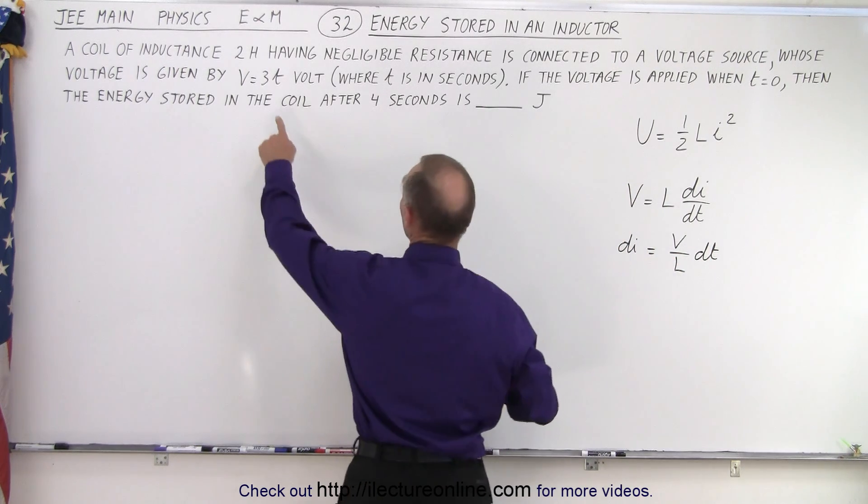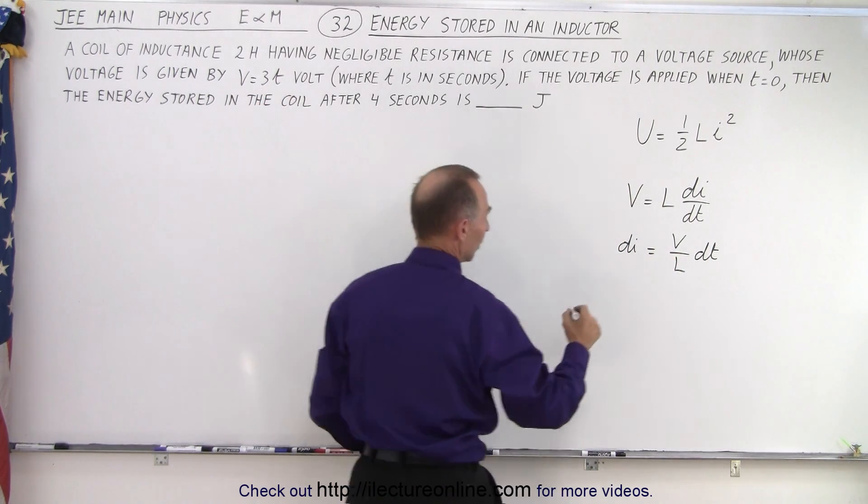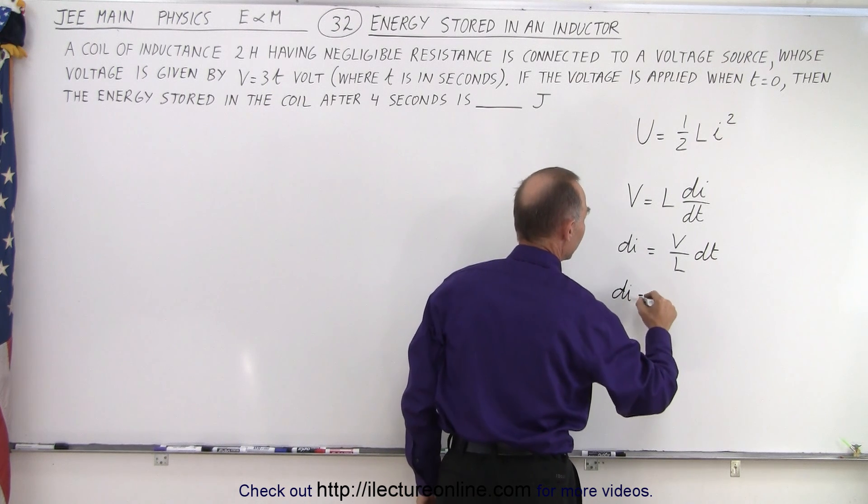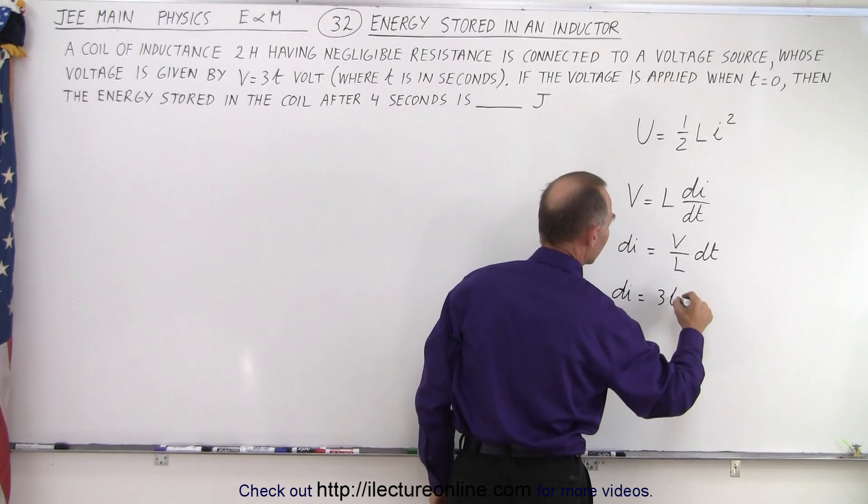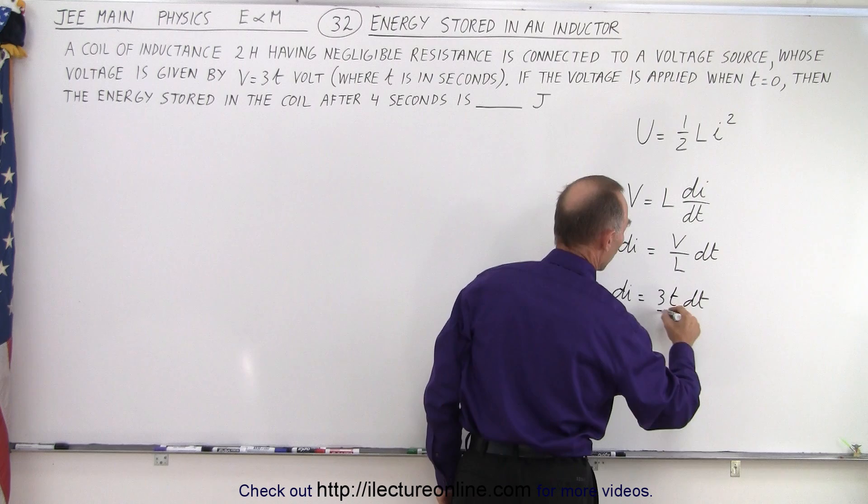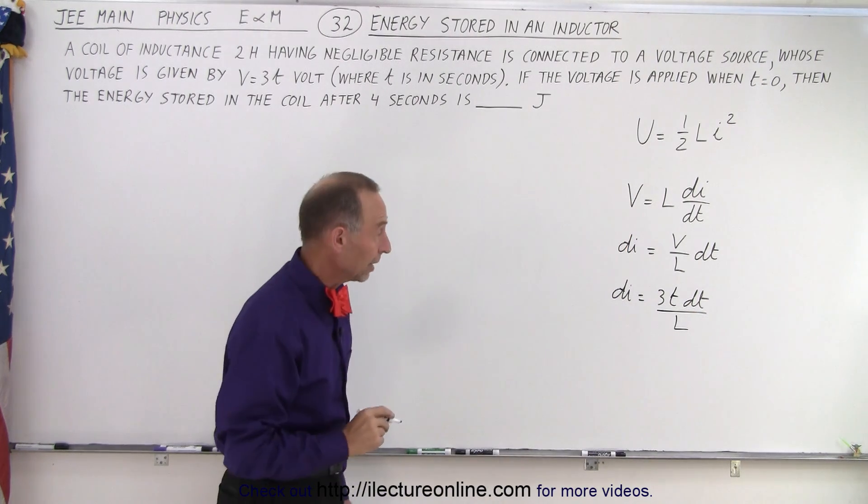Now remember that V was defined as 3t, so we can say that dI is equal to 3t dt over L, and that we can integrate.